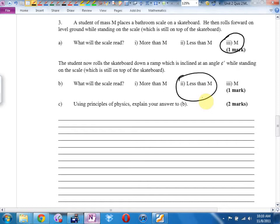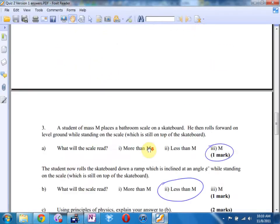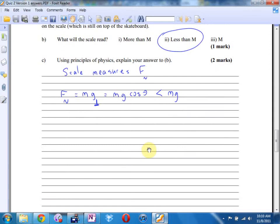Now the student rolls down the skateboard down a ramp, which is inclined at an angle, at some angle while standing on the scale. What will the scale read? More than M, less than M, or M? Brett. I agree. Convince me. Scale measures normal force. And I said the normal force is equal to Mg parallel. Probably if you drew a little ramp with a good free body diagram, that would really help. And Mg parallel is Mg cos. And it's always going to be less than Mg because cosine is a decimal.